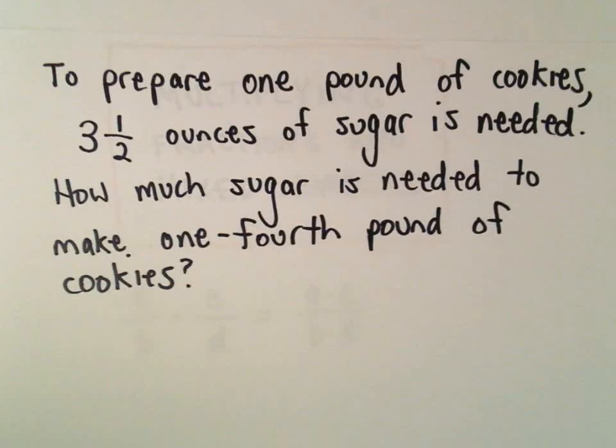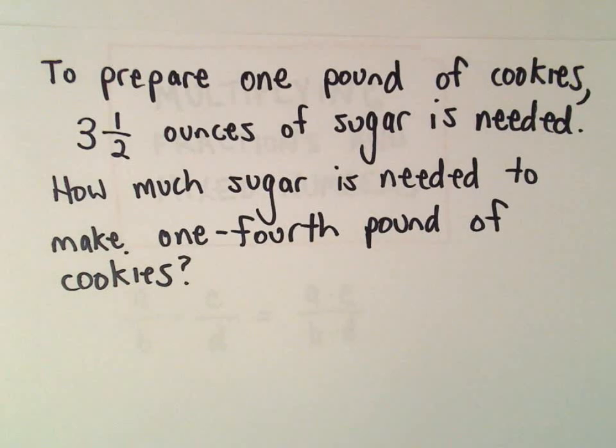Alright, so just a little word problem here involving fractions. To make one pound of cookies, one of the ingredients you need is three and a half ounces of sugar.